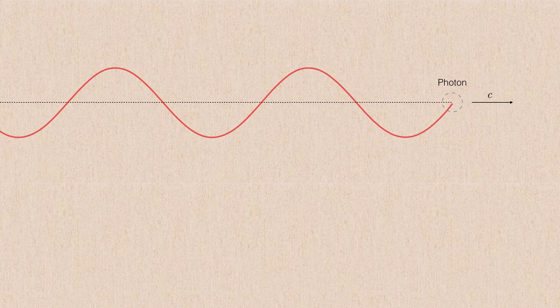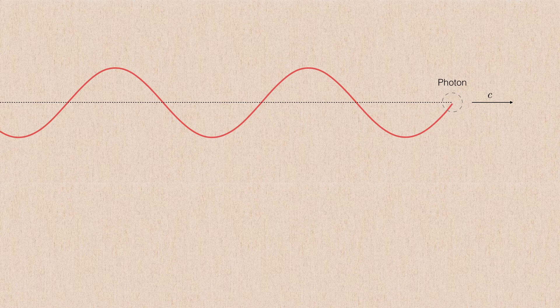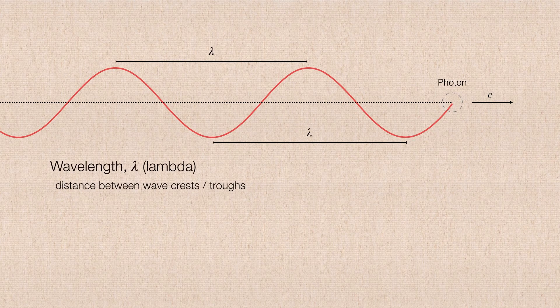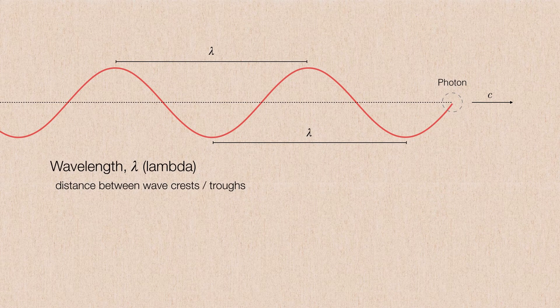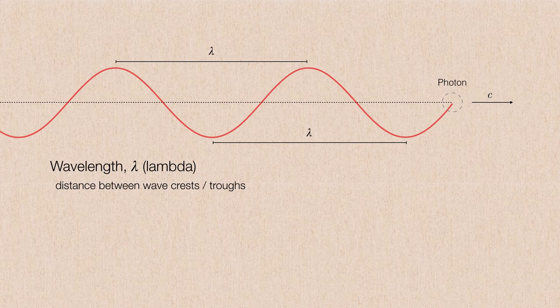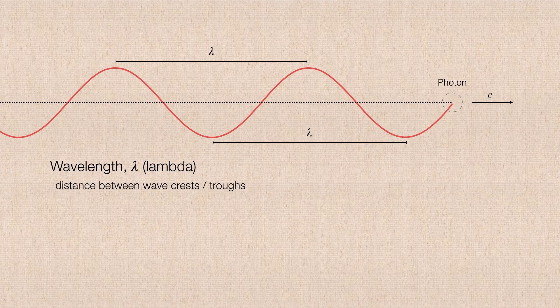If we look at the peaks of the waves and measure their distance, and we consider the troughs of the waves and we measure their distances, those distances are both the same, and we therefore call them the wavelength, represented by the lower Greek letter lambda. So it's simply the distance between the wave crests or the wave troughs.